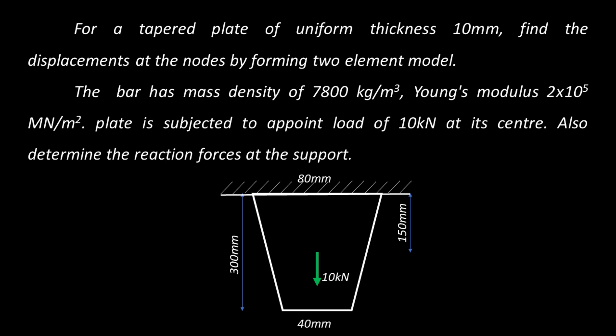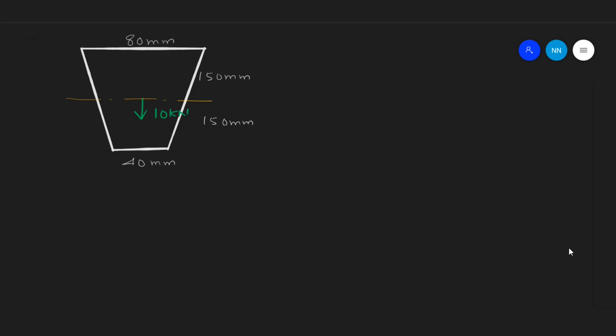As we can see in the problem, our beam has a varying cross-section. At the top portion, the width of the beam is 80 mm, and at the bottom portion it is 40 mm. So the area of cross-section at the top end is 80×10 mm, which is 800 mm², and at the bottom it is 40×10, which is 400 mm².